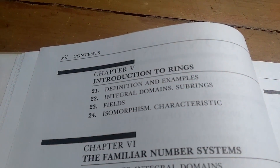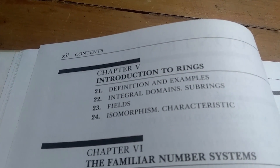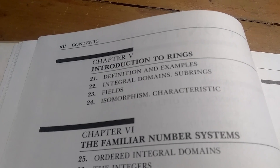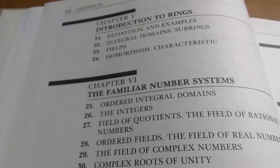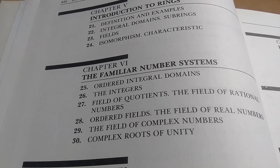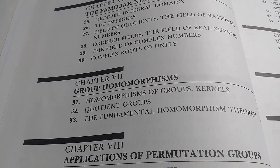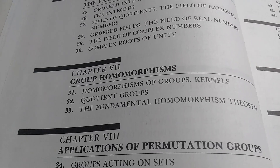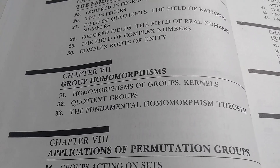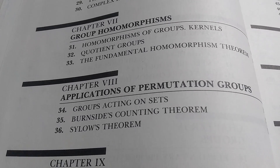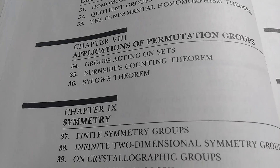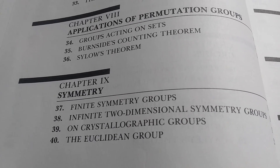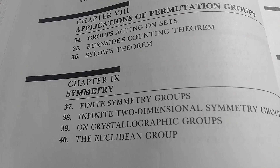If you're wondering what a ring is, Durbin covers it quite early — in chapter five — and he does a good job. I've actually read some of the ring theory sections in this textbook. He talks about some more specific things, including the familiar number systems. Then he goes back to groups and talks about group homomorphisms. That's again a unique approach: he covers rings before talking about homomorphisms of groups. Then he goes into applications of permutation groups, and there's an entire chapter on symmetry — which is one of the things I use this book for, as it's one of the few books I have with that material, making it quite unique.